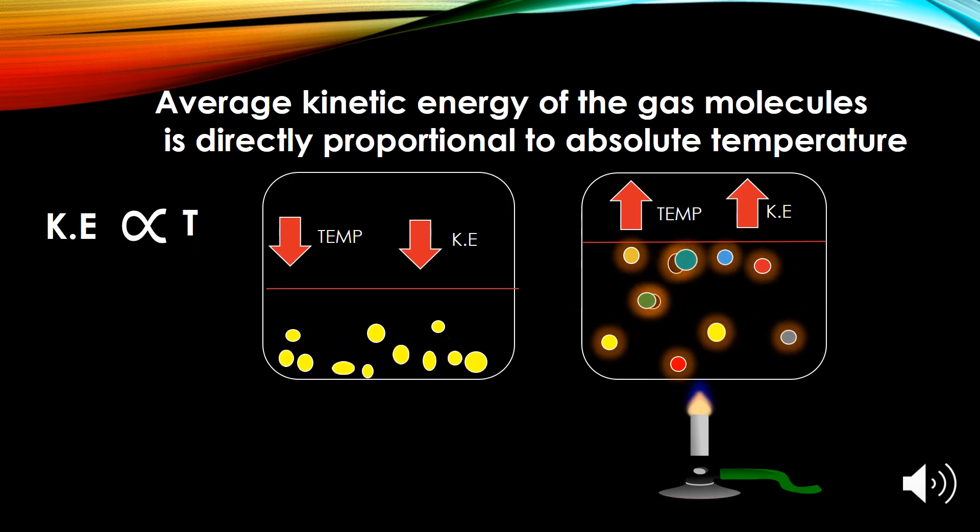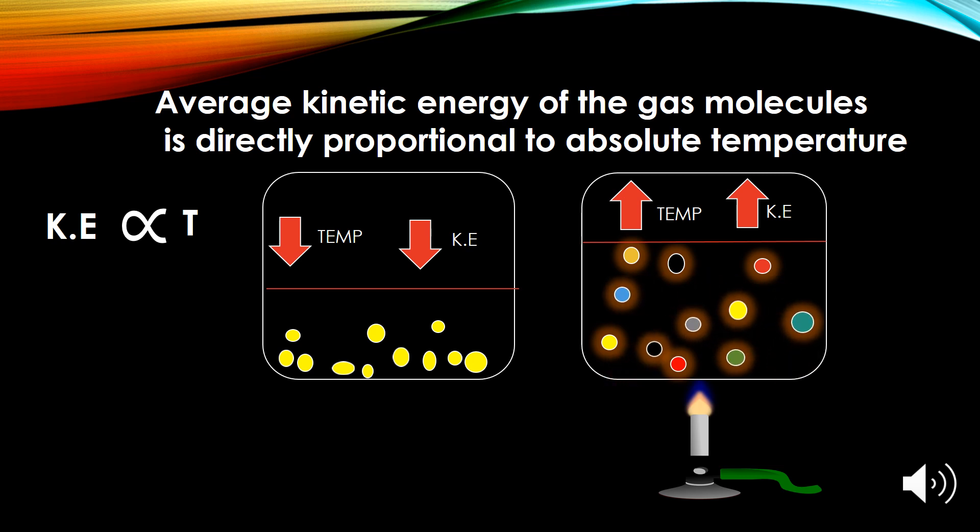Average kinetic energy of the gas molecules is directly proportional to the absolute temperature. As you can see here that the kinetic energy of the molecules is directly proportional to the absolute temperature. It means that when we increase one variable definitely other variable goes up.